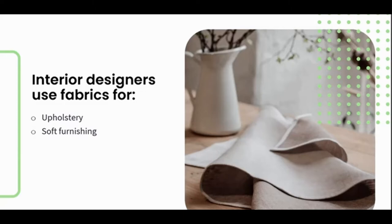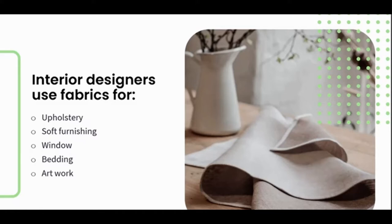We use fabrics for window treatments, referring to curtains or blinds — anything that covers a window. We could also use fabrics for bedding-related items such as sheets and duvets. We use fabric for artwork — art pieces, anything that sits on a wall — and these artworks may even have acoustic properties. So we may use fabric on walls specifically for its acoustic properties.